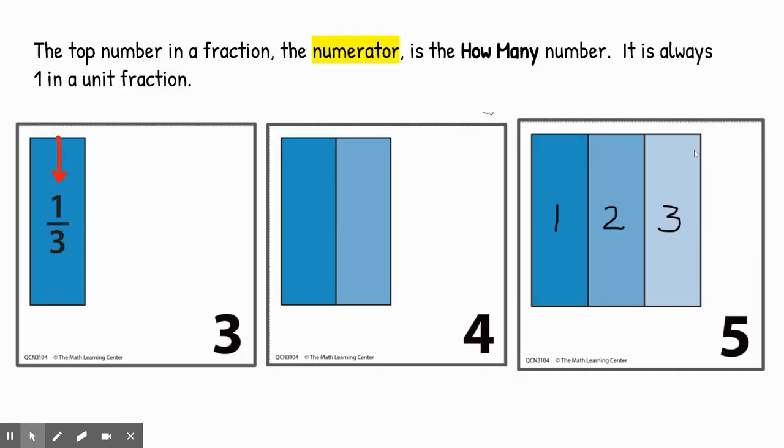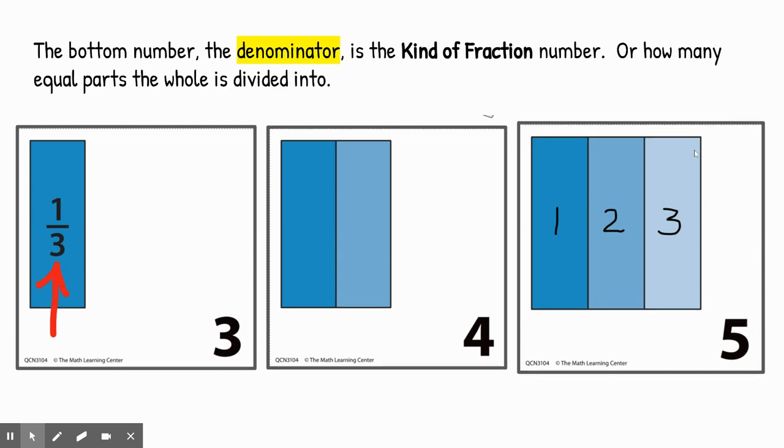So remember, the top number of a fraction is the numerator. It's the how many number. It is always one in a unit fraction. But the bottom number, the denominator, is the kind of fraction number, or how many equal parts the whole is divided into. So that three tells us the whole is going to be shared into or divided into three equal parts.